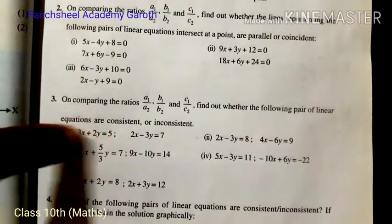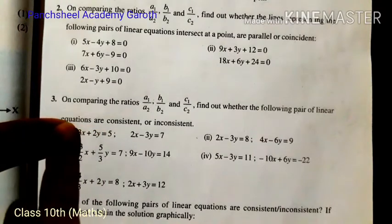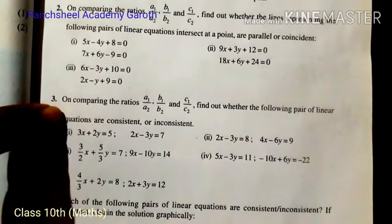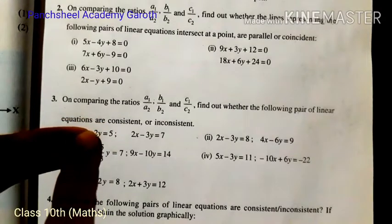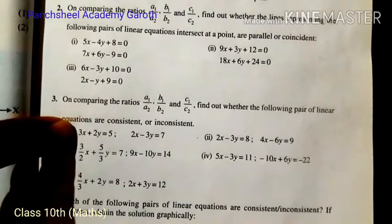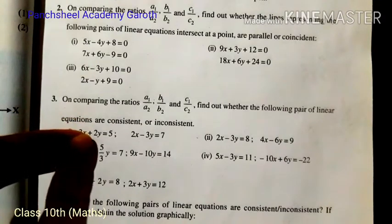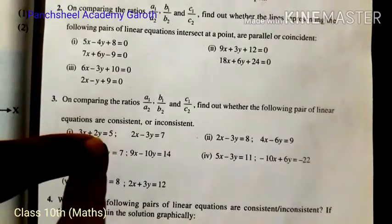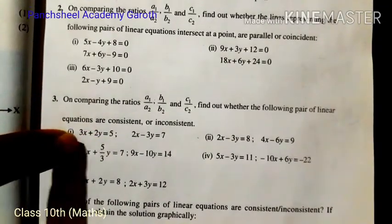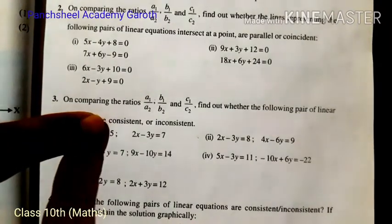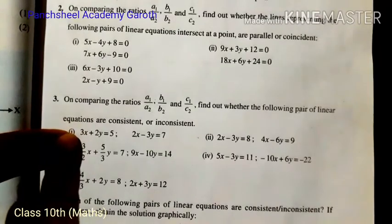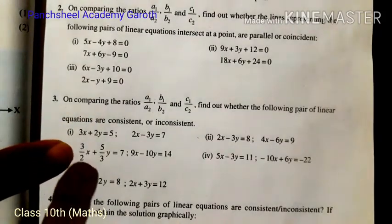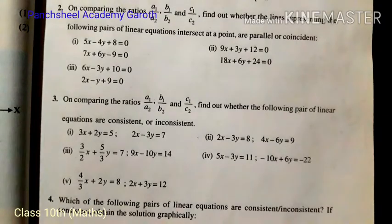Two equations either intersect each other, are parallel lines, or are coincident. So we find one solution or many solutions. If the system is consistent, it gives a unique solution or infinitely many solutions. If there is no solution, that means it's inconsistent. Okay, so let's solve question number three.